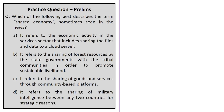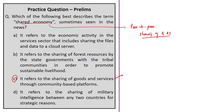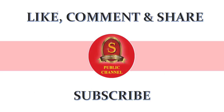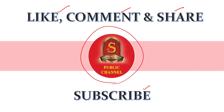The final question is on shared economy: which of the following best describes the term 'shared economy' as seen in news? As discussed, shared economy is defined as a peer-to-peer based activity of obtaining, giving, or sharing access to goods and services, usually done through community-based platforms, especially digital platforms. The correct answer is option C: it refers to the sharing of goods and services through community-based platforms. With this, we come to the end of today's analysis. If you like the video, press the like button, comment, share, and subscribe to Shankar IAS Academy YouTube channel for latest videos and updates. Stay focused and motivated.